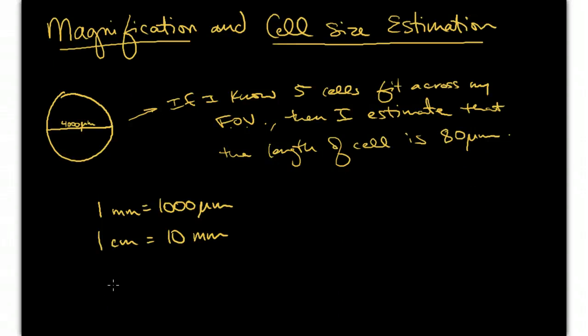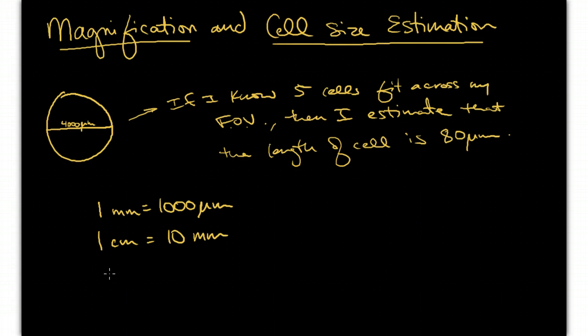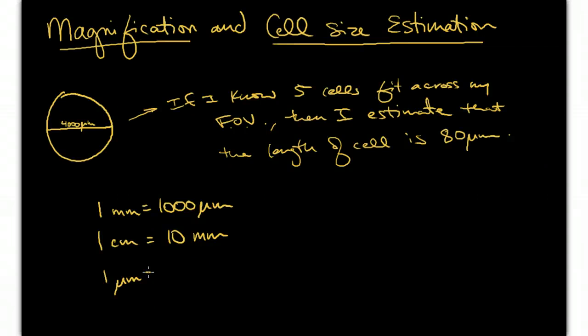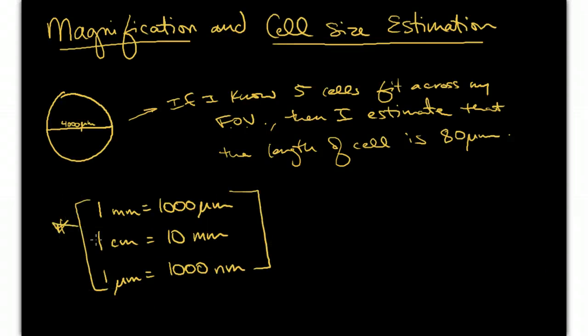And you may even need to know, when we talk about the size of different components of a cell, that within one micrometer, there are 1,000 nanometers. So these are factors that you need to commit to memory if you haven't already. And you need to know how to solve this kind of problem to estimate the cell size.